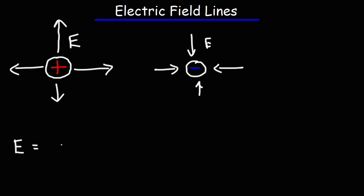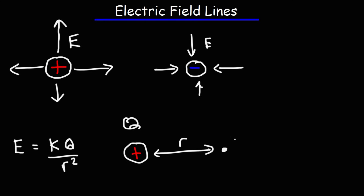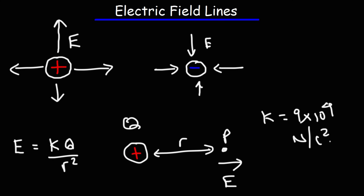The equation that helps you calculate the electric field is E = kq/r². This calculates the magnitude of the electric field from a point charge. Here, q represents the magnitude of the charge in coulombs, r is the distance between the point charge and the point of interest where you want to measure the field, and k is a constant approximately equal to 9×10⁹ N·m²/C².